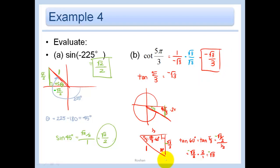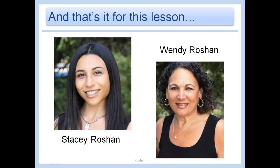In summary, when doing these problems, make sure you draw the picture so that your signs are correct. Put the positive and negative signs based on whether your y-coordinate or x-coordinate is positive or negative. Here, x was positive but y was negative. And that's it for this lesson. Bye!